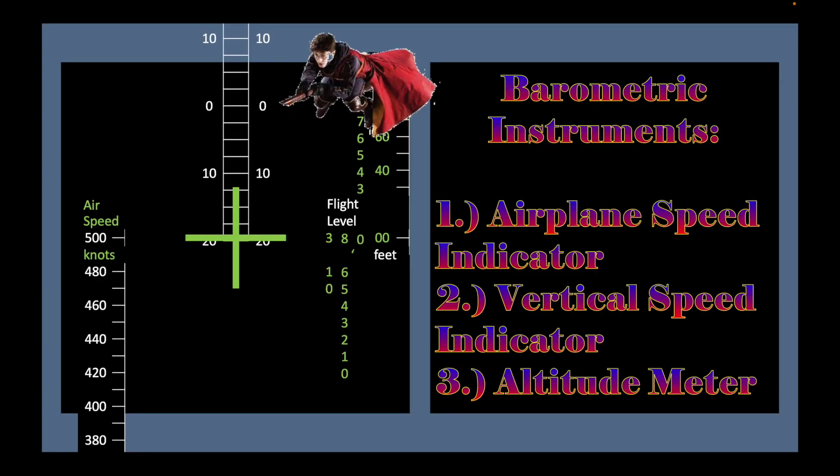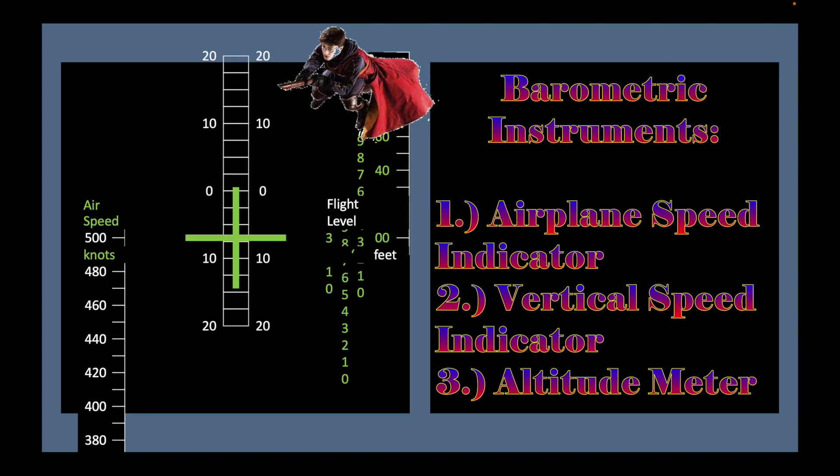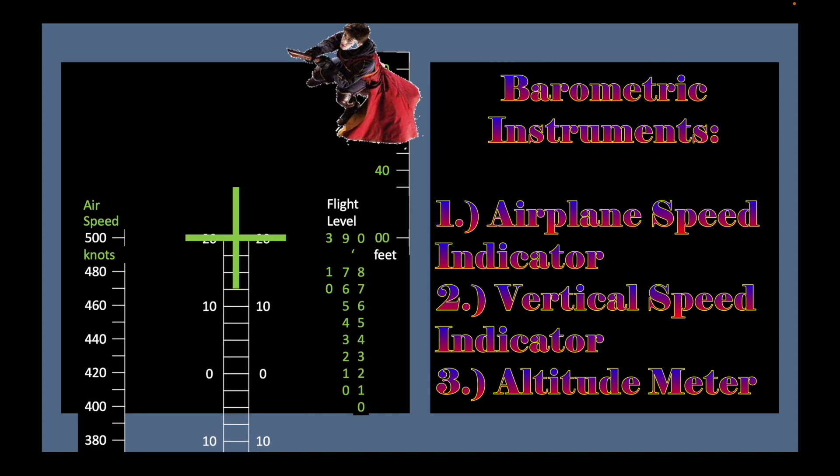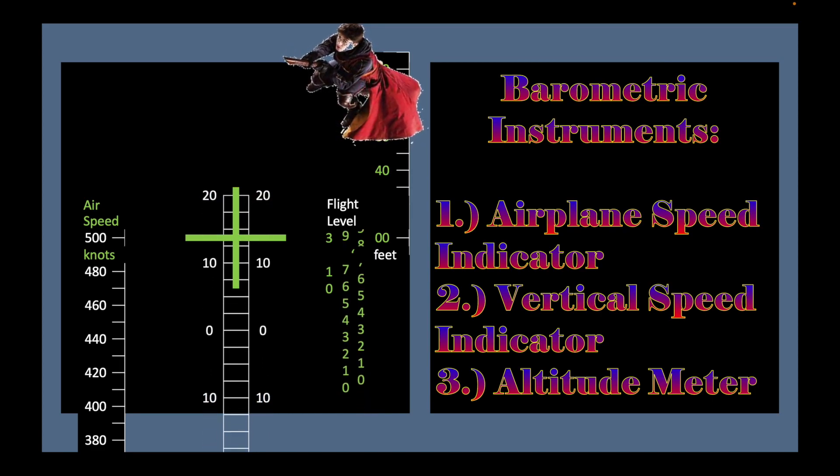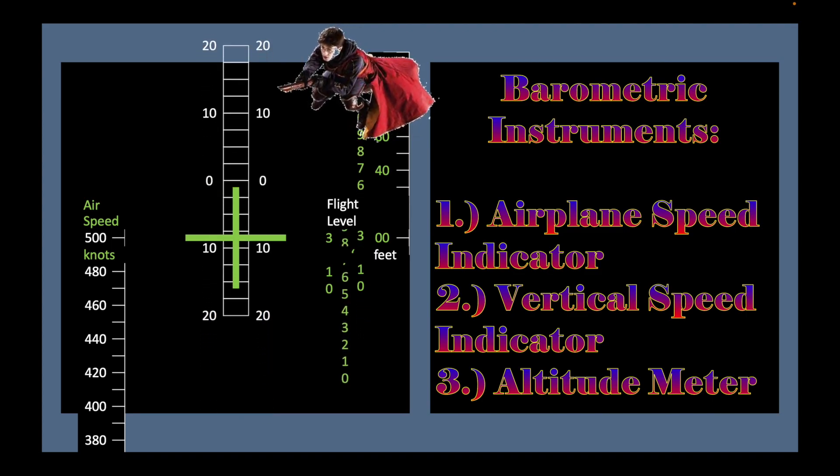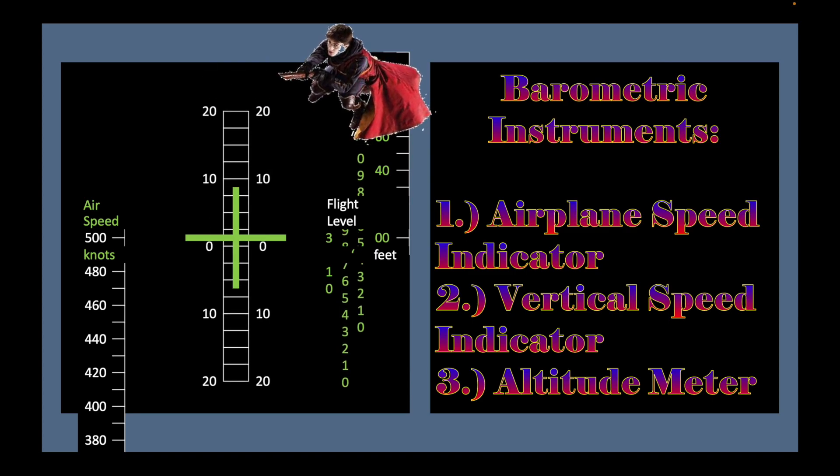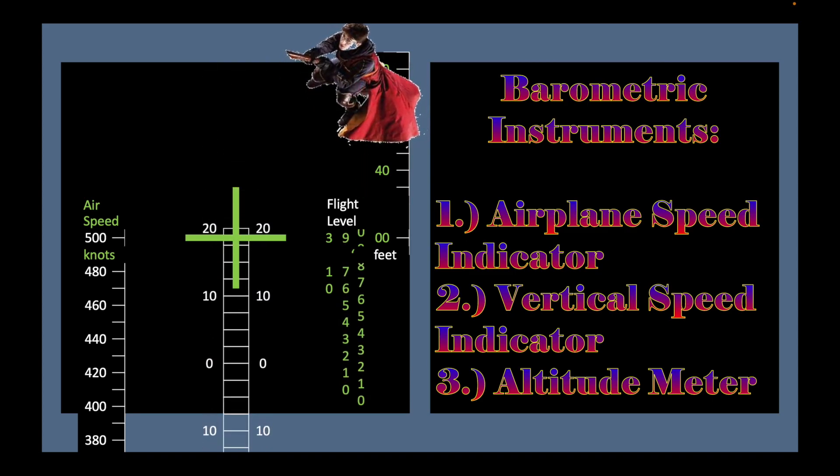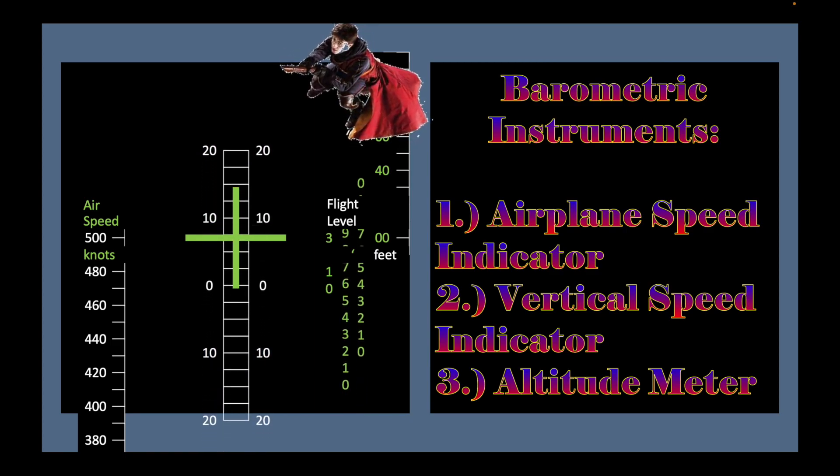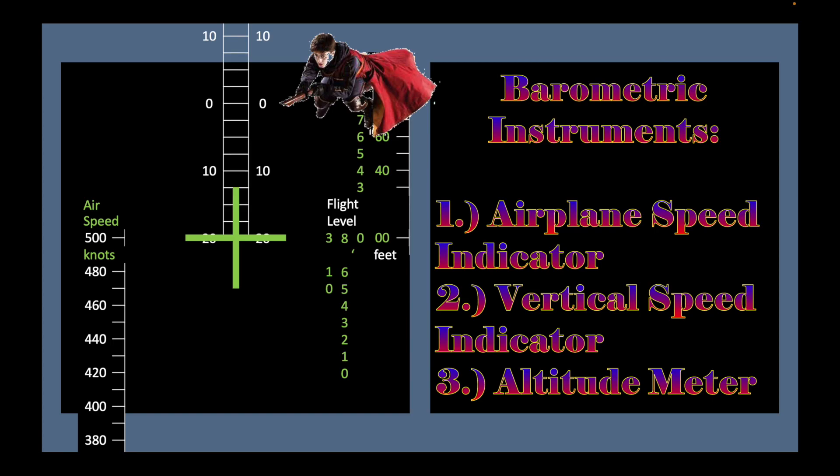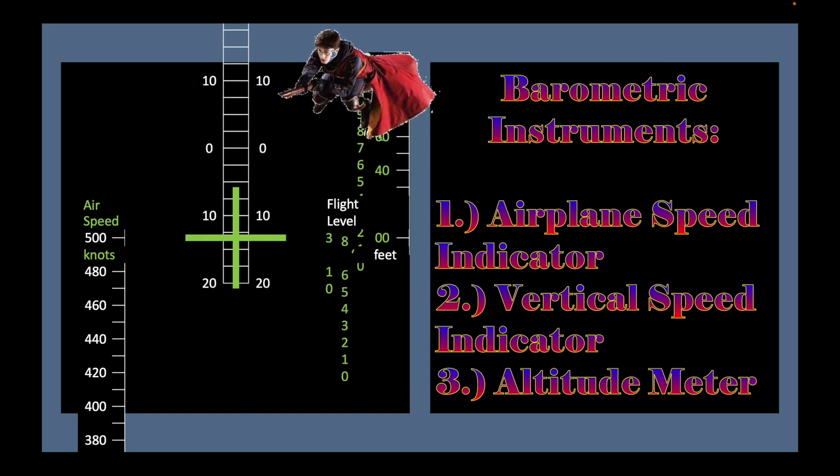The altimeter, airplane speed indicator, and vertical speed indicator all rely on air pressure, meaning the greater the air pressure, the greater its number reading would indicate. But sometimes it can be the opposite because the higher the airplane flies, there is lesser air pressure in higher altitudes. That's why airplanes can fly faster at higher flight levels.